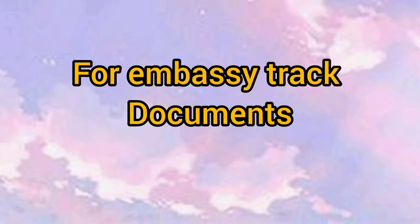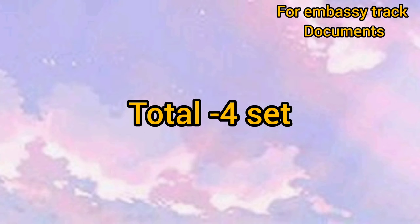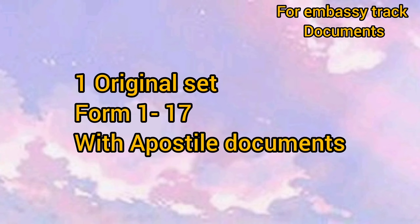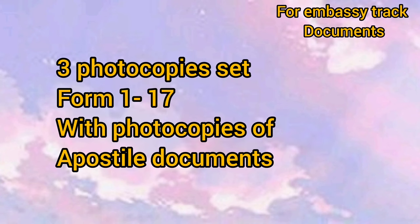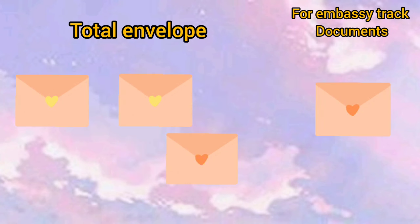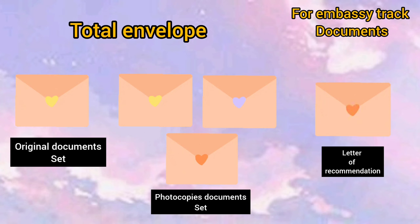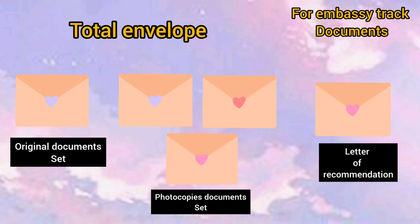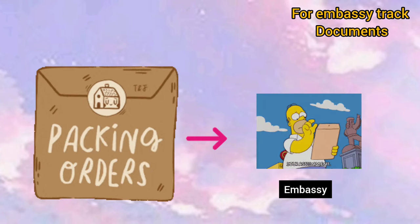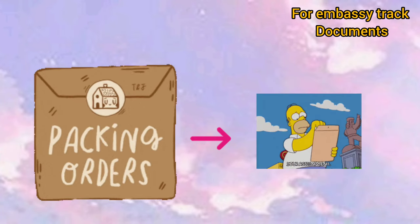Now let's talk about how to arrange documents for the embassy track. You need a total of four sets: one set is original documents and three sets are photocopies. The original set contains your original documents and the three copies are photocopies. For the embassy track, the letter of recommendation is also included. You keep these five envelopes inside one big envelope and send it to the embassy. This is how you arrange documents for both the embassy track and university track applications.